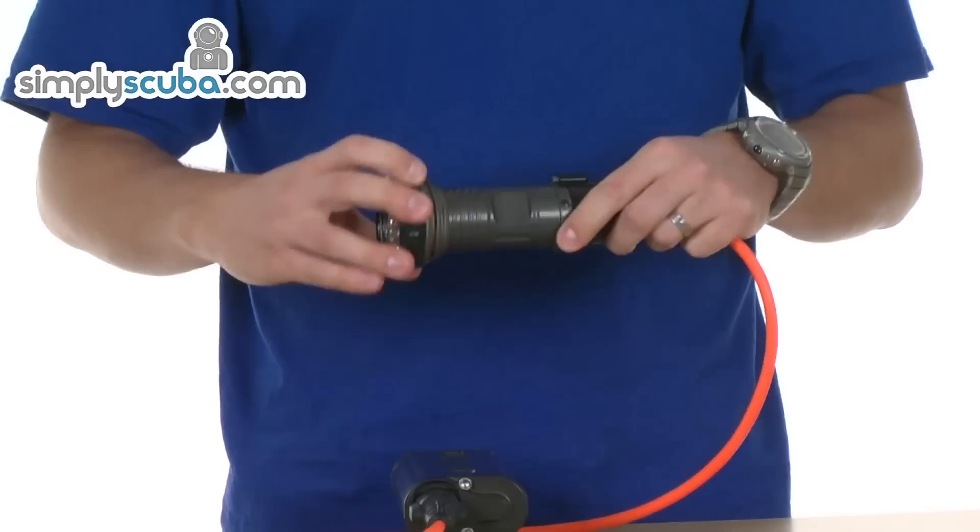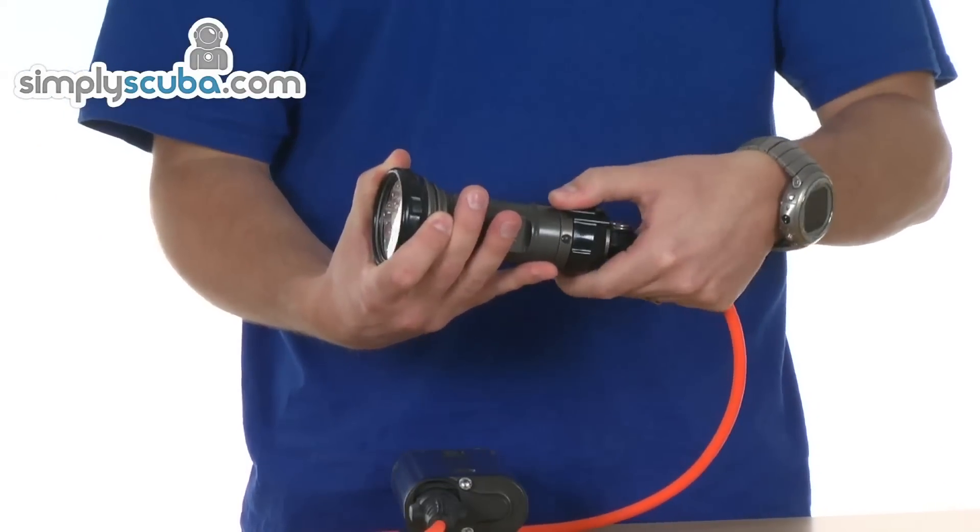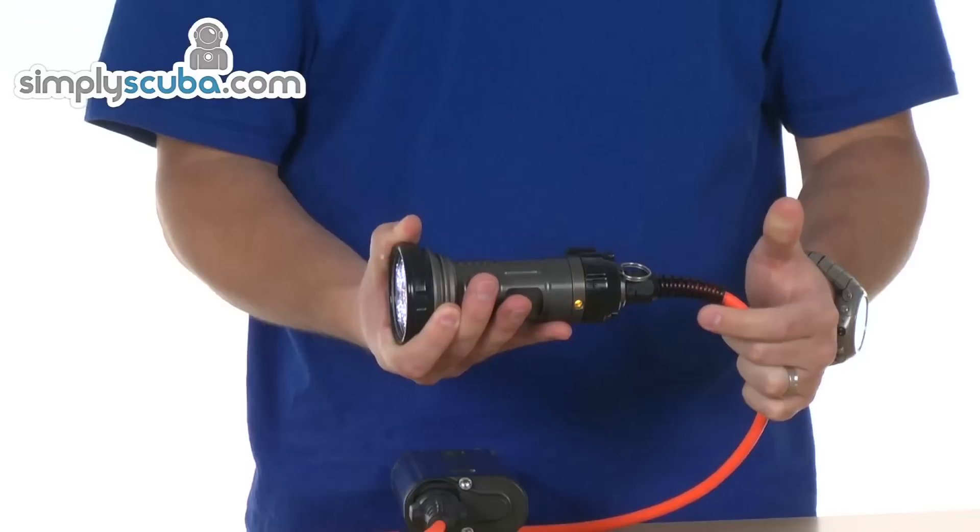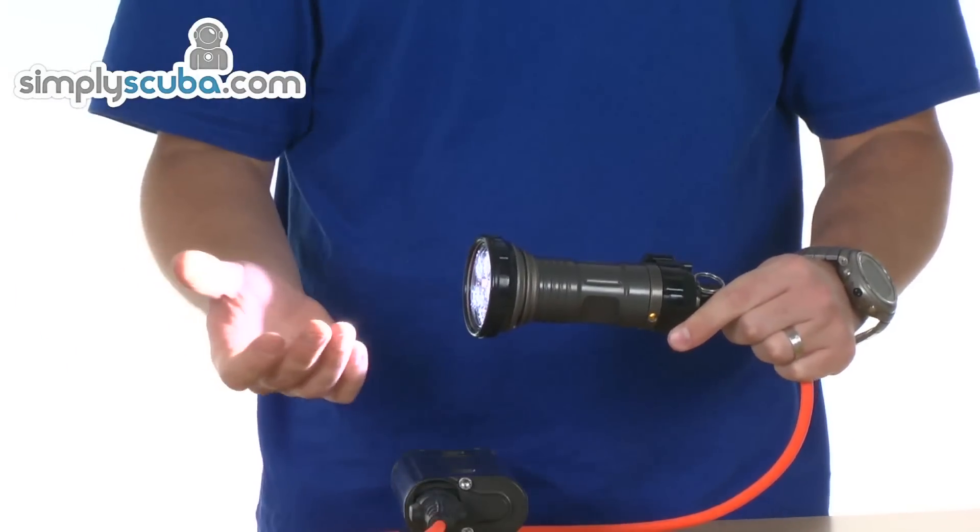Very easy to use. Literally you've got a sliding lock on the top of the head unit. You just pull it back and you turn the head unit. It's a soft start, so it will build up in terms of power, so obviously the head unit doesn't get damaged.